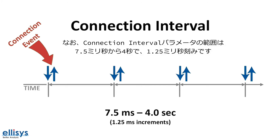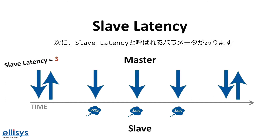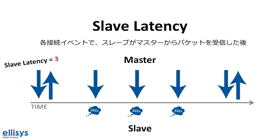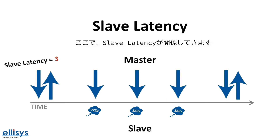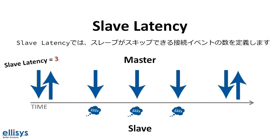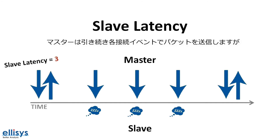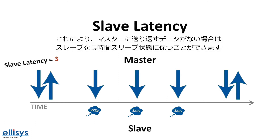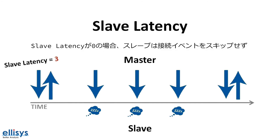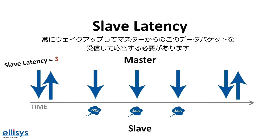The connection interval parameter ranges from 7.5 milliseconds to 4 seconds in increments of 1.25 milliseconds. Next, we have a parameter called the slave latency. At each connection event, after the slave receives a packet from the master, it needs to respond with another packet — with one exception, and this is where the slave latency parameter comes in. The slave latency defines the number of connection events that a slave can skip. The master still wakes up and sends a packet at each connection event, but the slave simply ignores the event and can stay asleep. This allows the slave to stay asleep for longer periods when no data is available, while still being able to have quicker data transfers when necessary. A slave latency value of zero means the slave will not skip any connection events and will always wake up to receive and respond to data packets from the master.